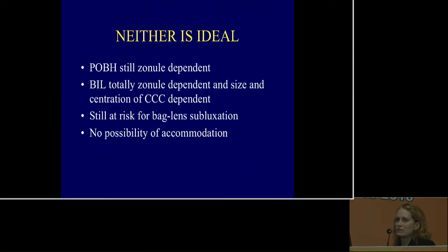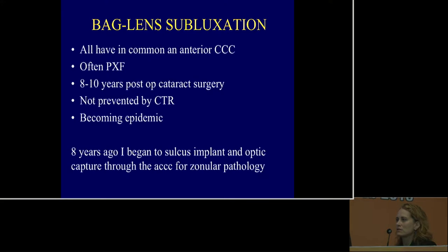Neither primary posterior buttonhole nor bag-in-the-lens technology is ideal, because both rely on good zonular support. Over time, you can have decentration and subluxation of the bag and the lens, with no possibility for accommodation. What late bag-lens subluxations have in common is an anterior capsulorhexis. This often happens 8 to 10 years after cataract surgery, is not prevented by a CTR, and is becoming an epidemic. One way to avoid this is to put the haptics in the sulcus and capture the IOL through one or two capsulorhexes.